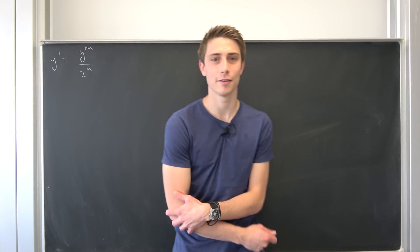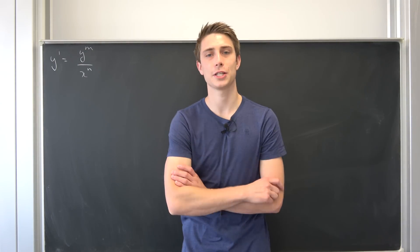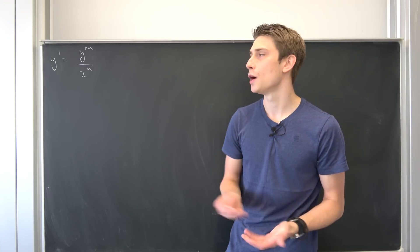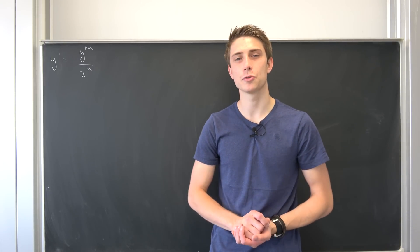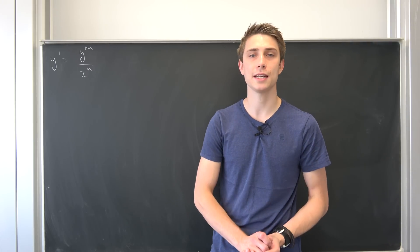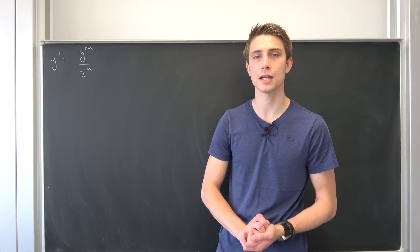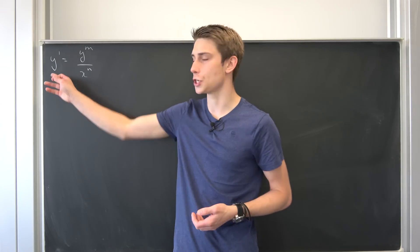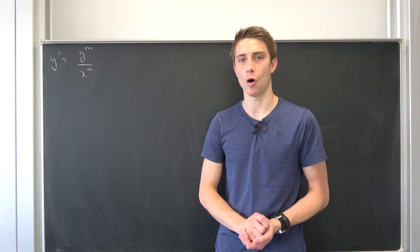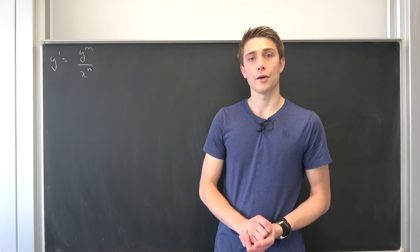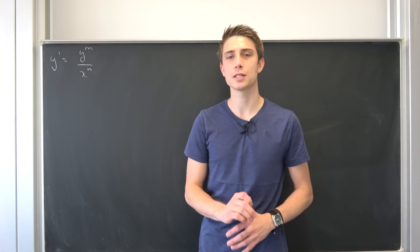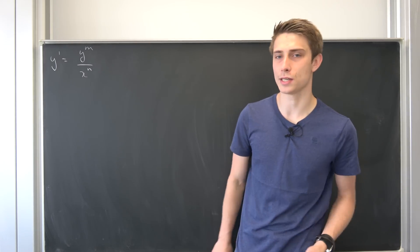Good morning fellow mathematicians, welcome back to another video. Back at differential equation exercises, and this is part two of the video you have seen before. We want to deal with y prime being equal to y to the nth power over x to the nth power, and we want m and n to be elements of the real numbers. We want to derive the general solution for y and see if we run into any contradiction. Let's get started and solve this using the easy ways.